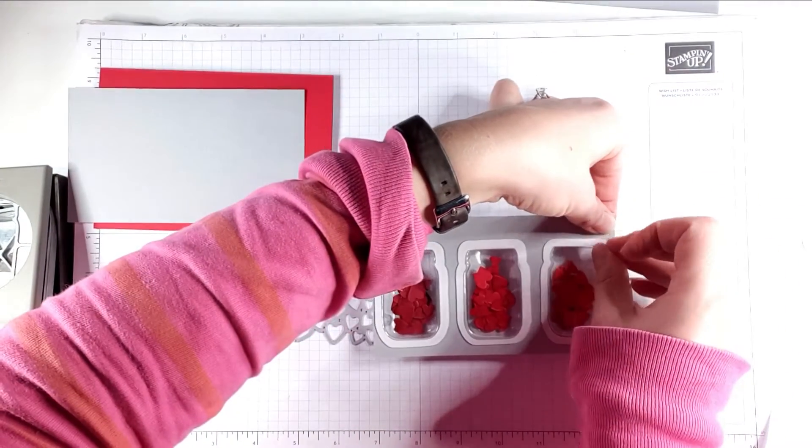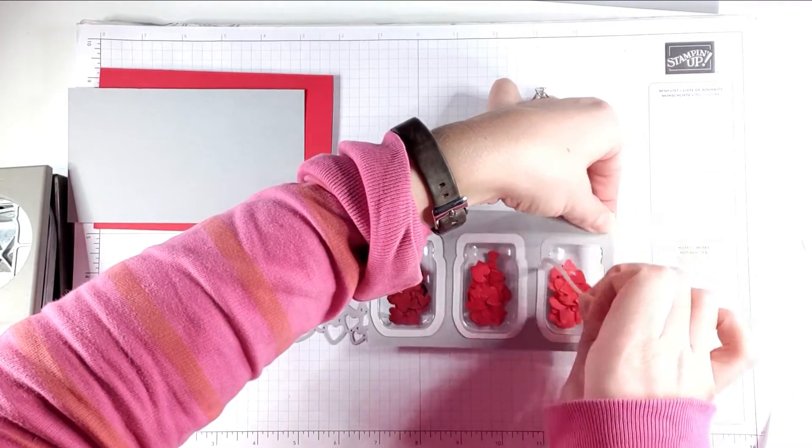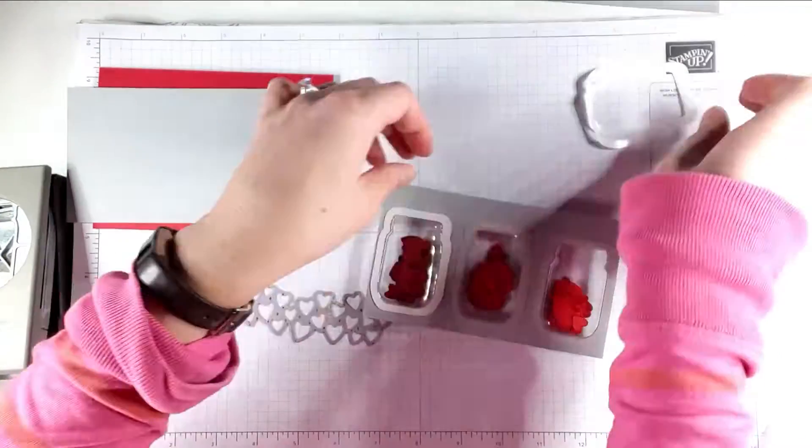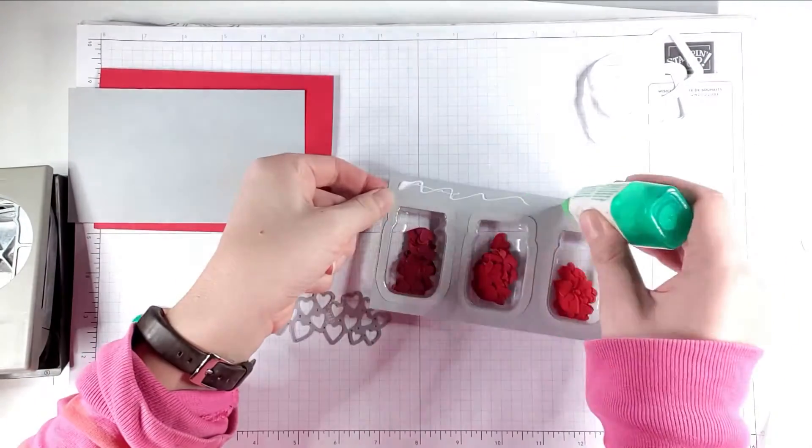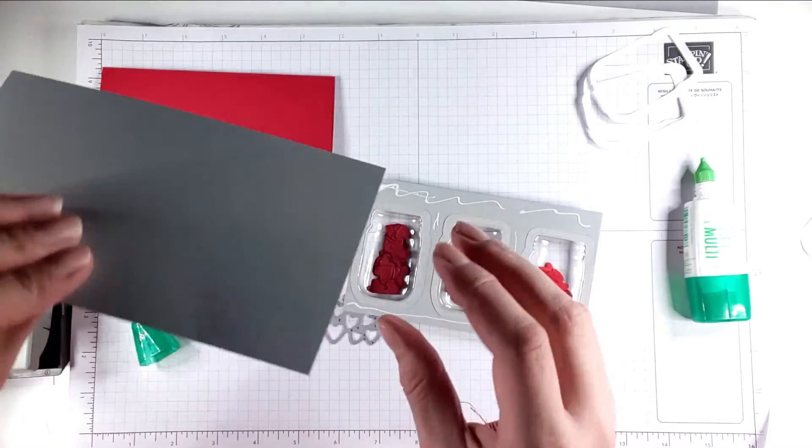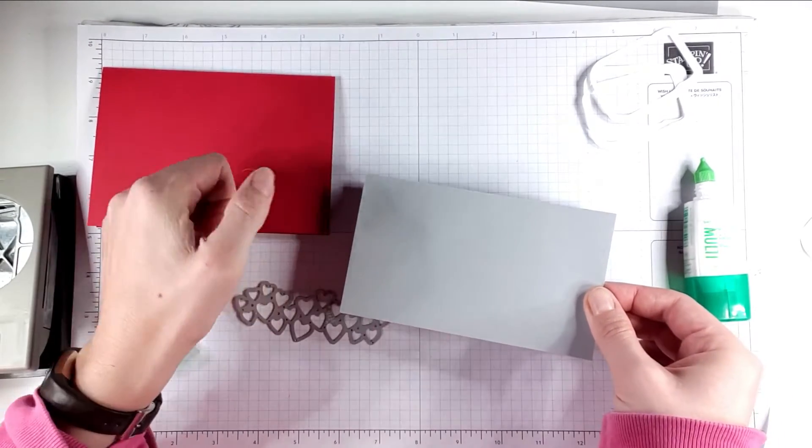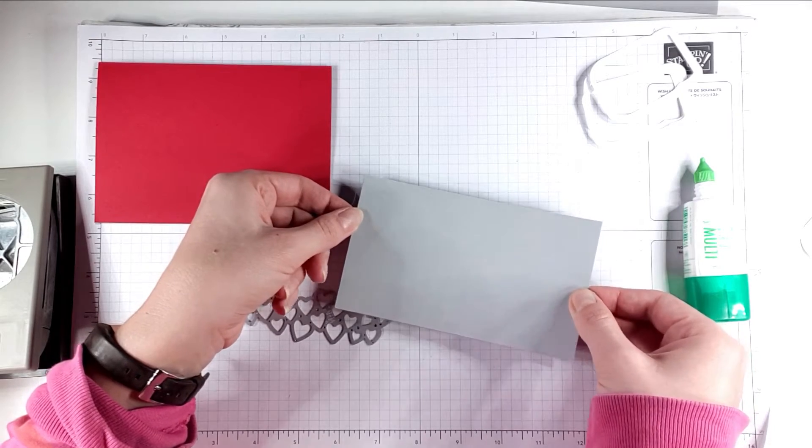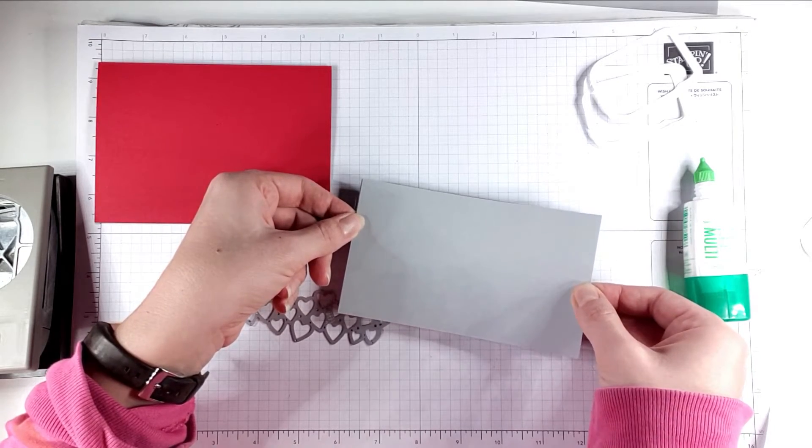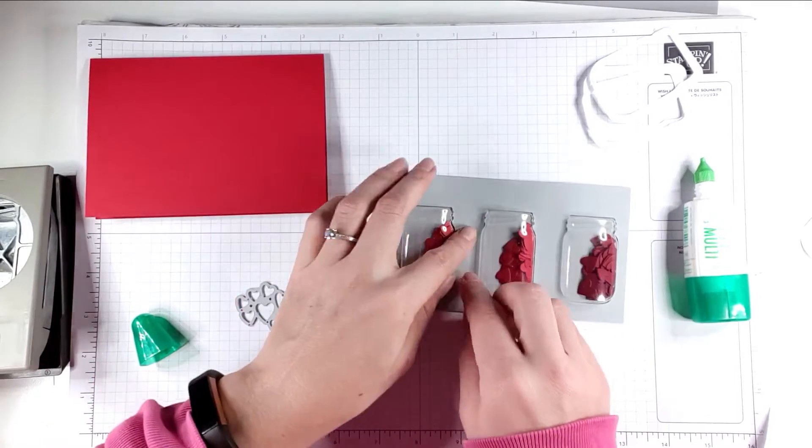I'm just going to take the backing off of these. I'm going to add a bit of glue, and then I'm just going to pop the other piece of smoky slate cardstock just on the back. Push all that down.